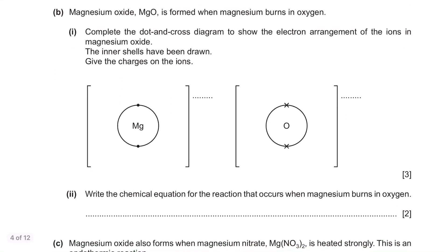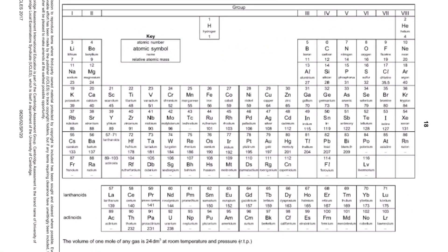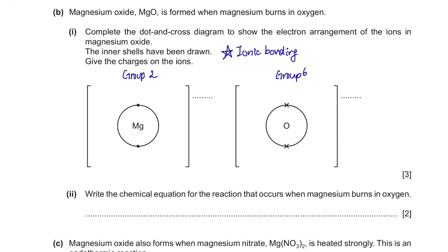Part b. Magnesium oxide, MgO, is formed when magnesium burns in oxygen. For the dot-and-cross diagram showing the electron arrangement of the ions in magnesium oxide: magnesium is in group 2 and oxygen is in group 6, so magnesium gives 2 electrons to oxygen to form a complete outer shell. The oxygen ion should show 6 crosses plus 2 dots donated by magnesium, giving a full octet. The charges are +2 for magnesium and −2 for oxygen.